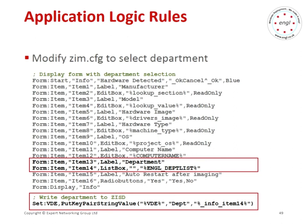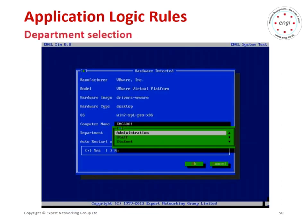We're going to extend the standard XIM form that appears when you image a machine the first time — which shows you hardware information and lets you change the computer name — and we're going to add a drop-down list for the department. We've got this ENGL depth list variable created using our any file, which Heath read in during part one. Once displayed, the user selects the department, and we write that information into ImageSafe data. Here's our custom form section showing the department — in this case, we've detected the school location with three different departments to select from.